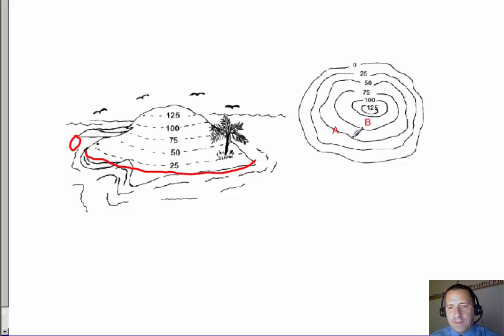At point A, everything along this line is at that elevation. So everything on this line right here is at 50 feet of elevation.